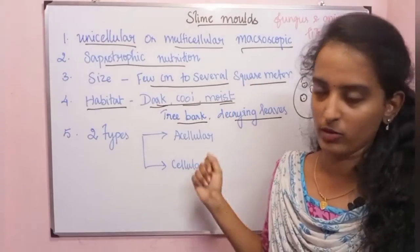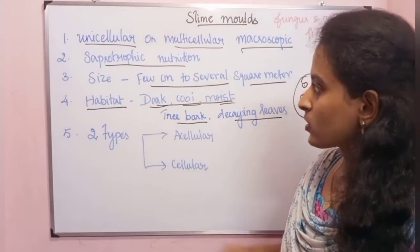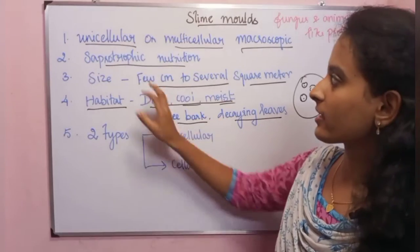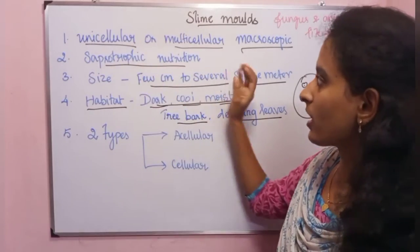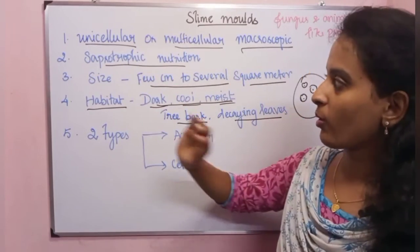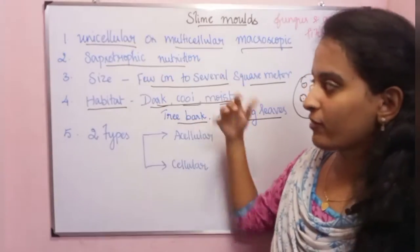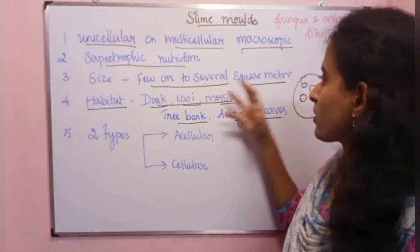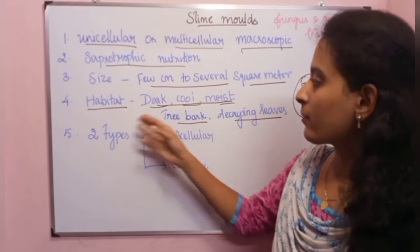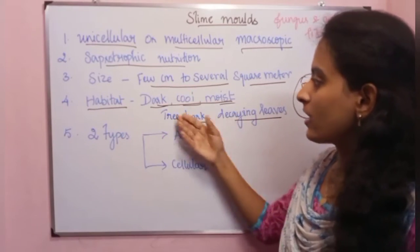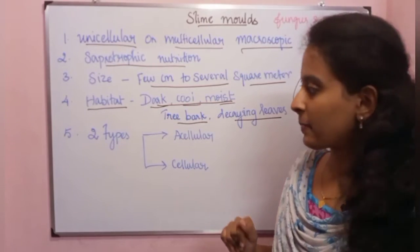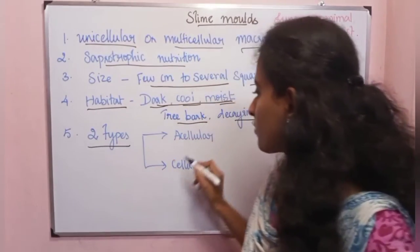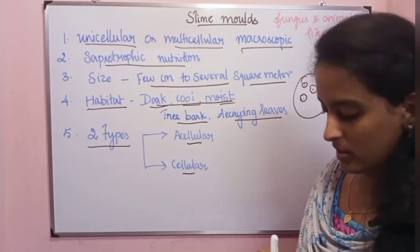In summary, the general characteristics of slime molds are: unicellular or multicellular, multi-nucleate, macroscopic, saprotrophic nutrition, size varies from a few centimeters to several square meters, and habitat is dark, cold, and moist.